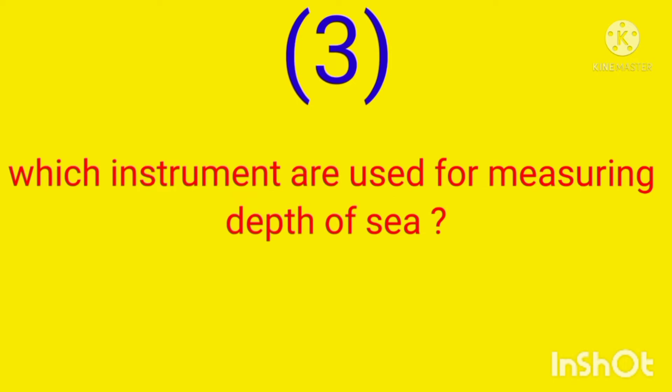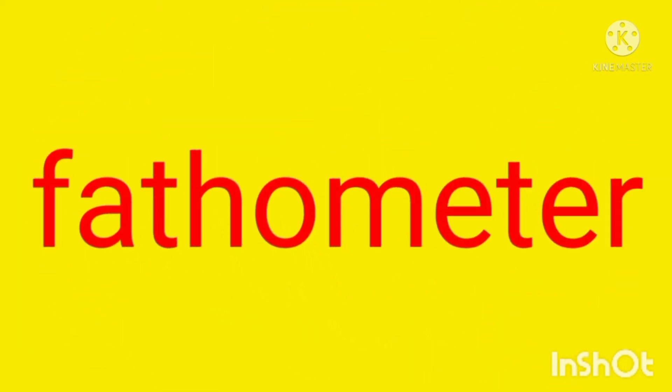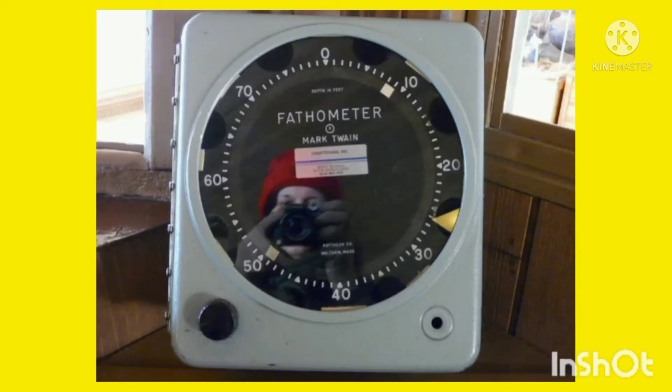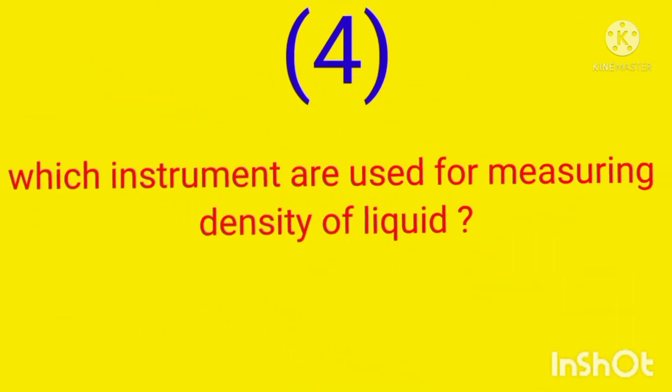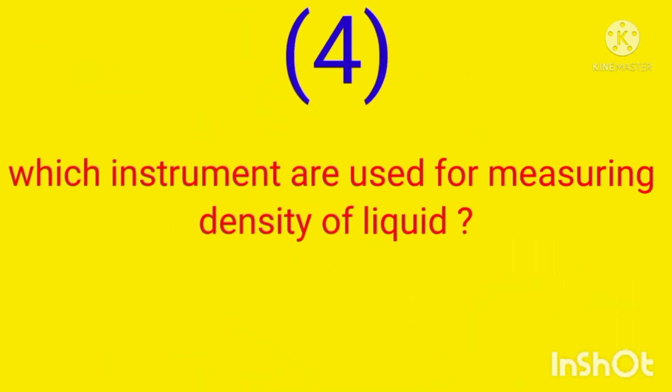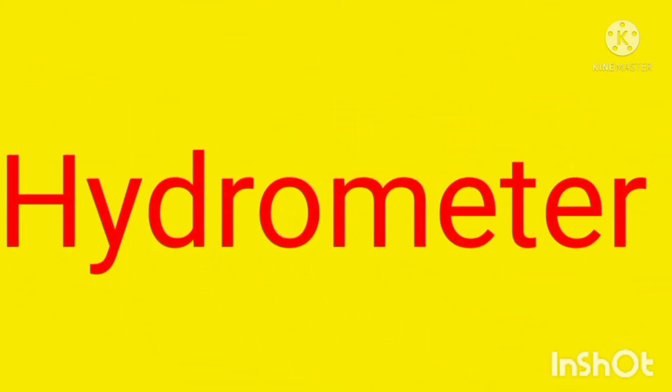Which instrument is used for measuring the depth of the sea? Fathometer. Which instrument is used for measuring the density of a liquid? Hydrometer.